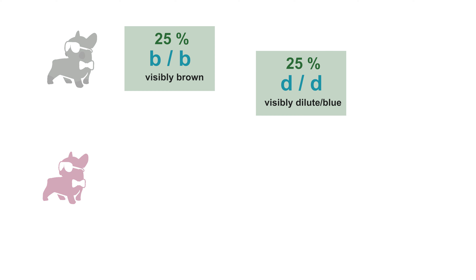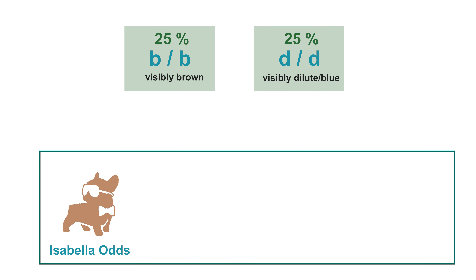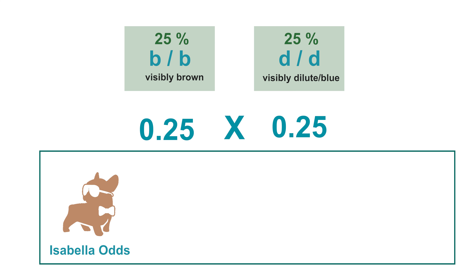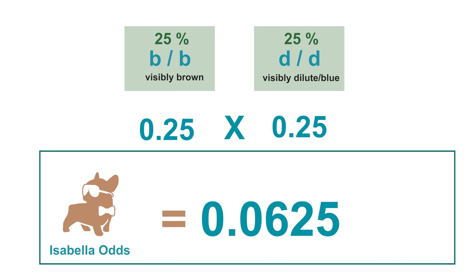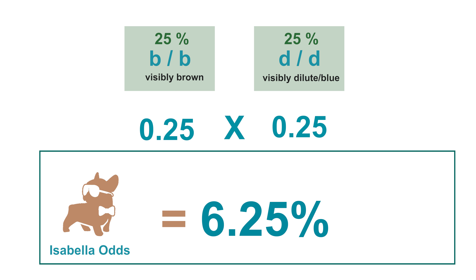So we know we have a 25% chance of visibly dilute and a 25% chance of visibly brown. To calculate the odds of those lining up together to create our Isabella, we'll take our brown gene and express the percentage as a decimal at 0.25, do the same with our dilute gene, then multiply them together and arrive at 0.0625 — or as a percentage, a 6.25% chance of creating an Isabella from these two dogs.